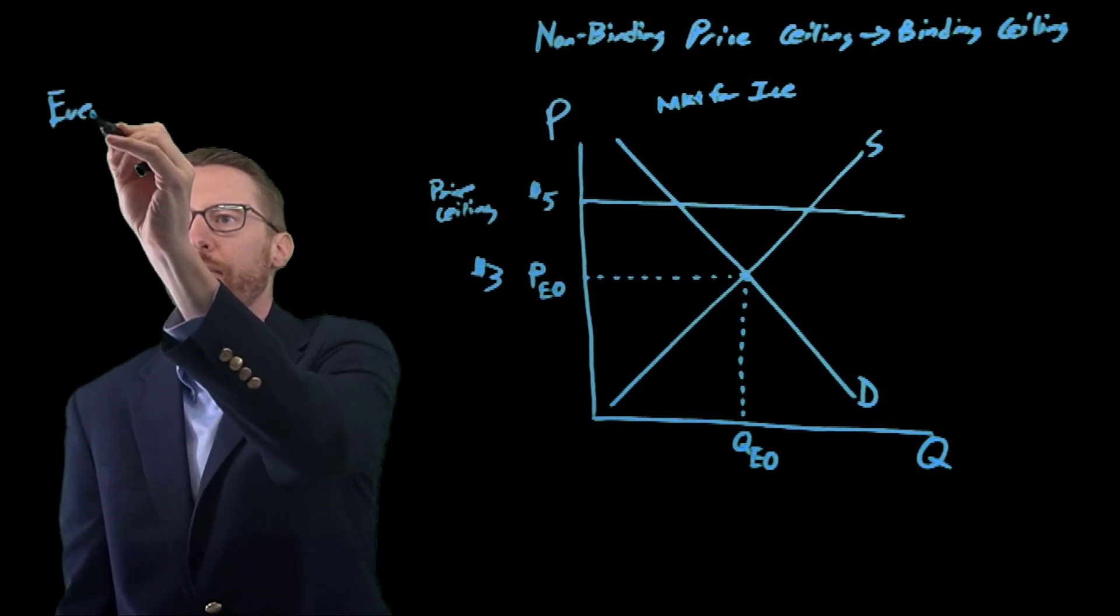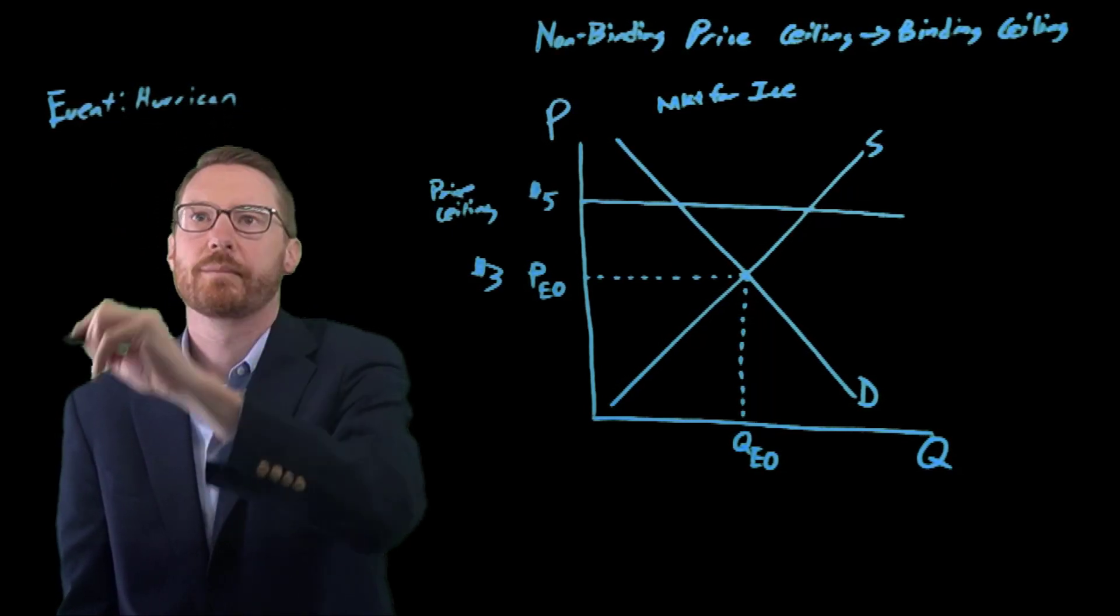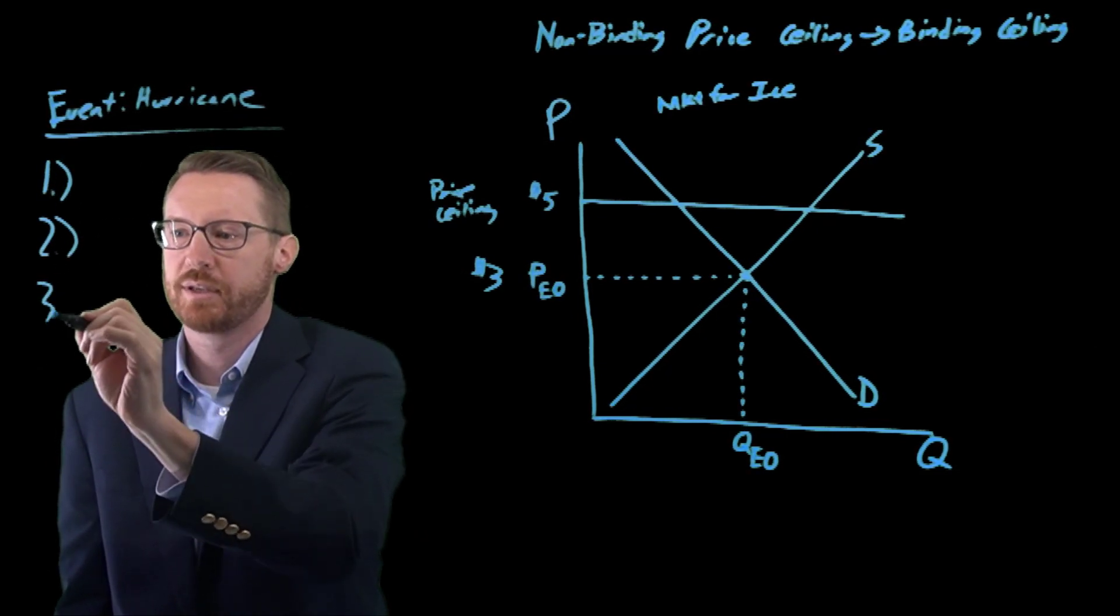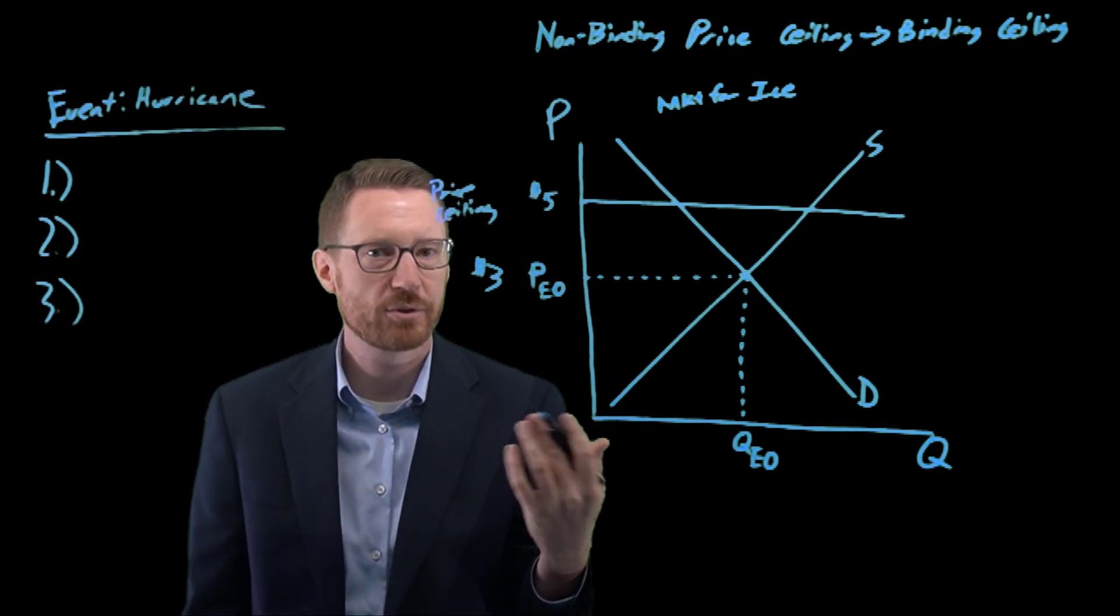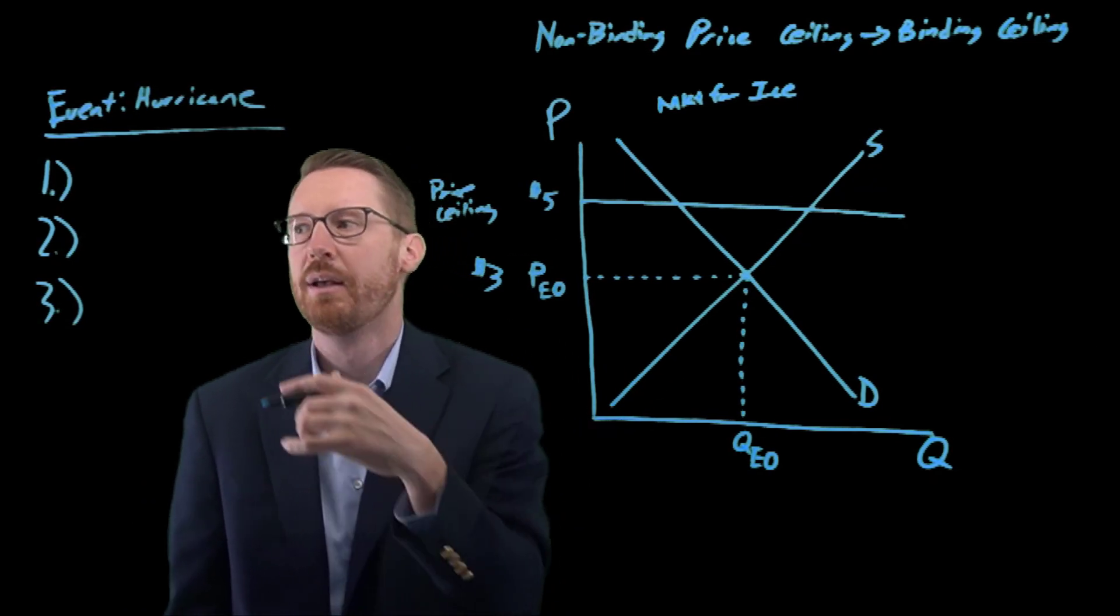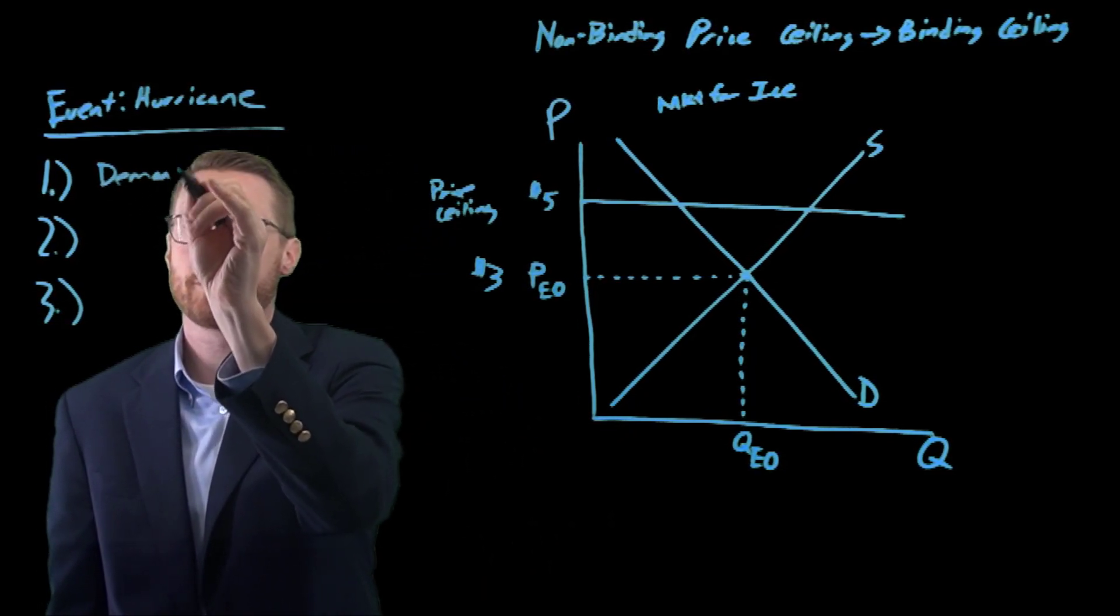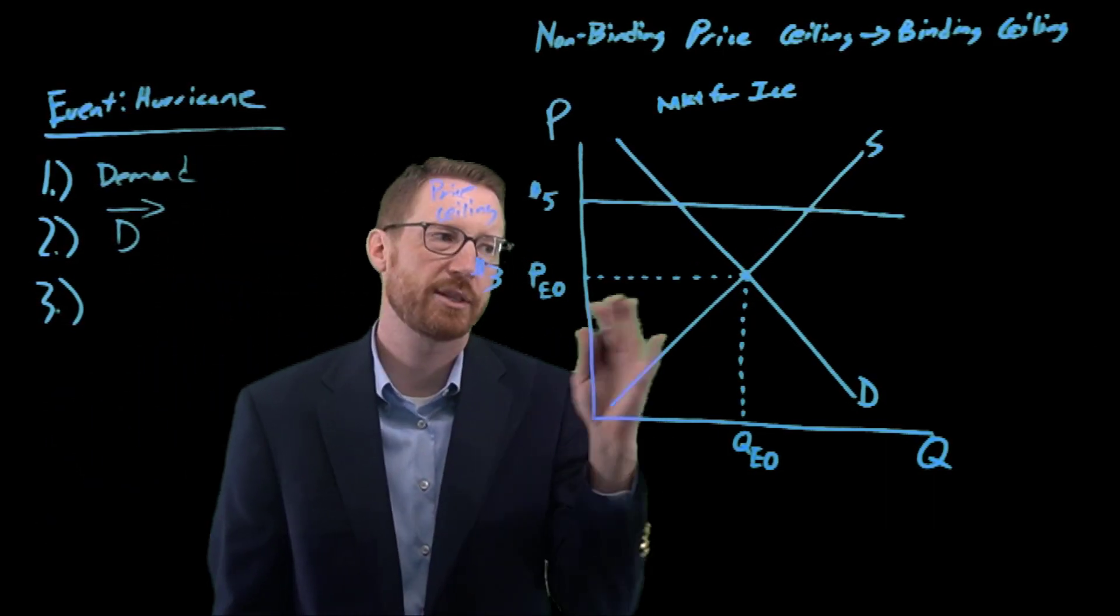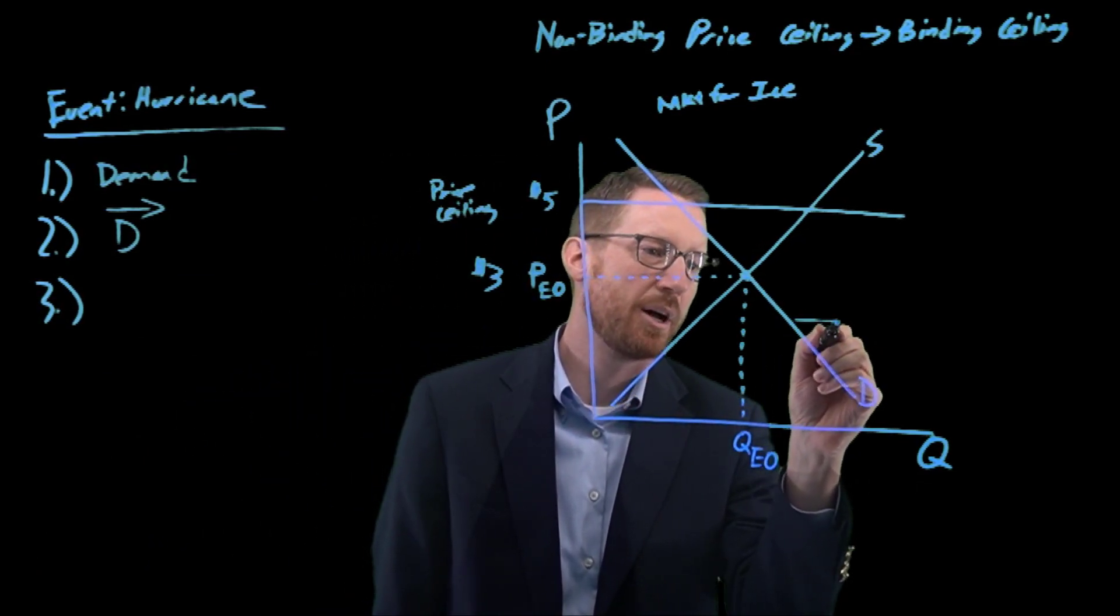So for our event, let's put it over here. We've got our three-step process. Which step is affected? If a hurricane comes along, knocks out power at people's houses, this is going to be a story about the demand for ice. This is a story about demand, and demand increases. Let's draw that in and see what happens. Suppose demand increases a lot.